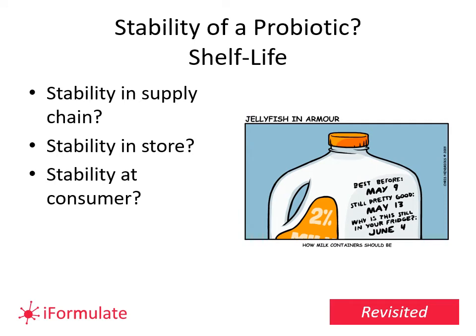Then there's shelf life. You might have made it and formed it, but then you've got a supply chain before it even reaches the consumer, a shelf life in store before the consumer buys it, and then stability at the consumer — maybe in their fridge — before going through the body. There's a whole load of elements. This cartoon reminds me of student days — perhaps buying milk that says best before May 9th, still pretty good on May 13th, but why is it still in the fridge on June 4th? It brings across that there are different ways of looking at stability.